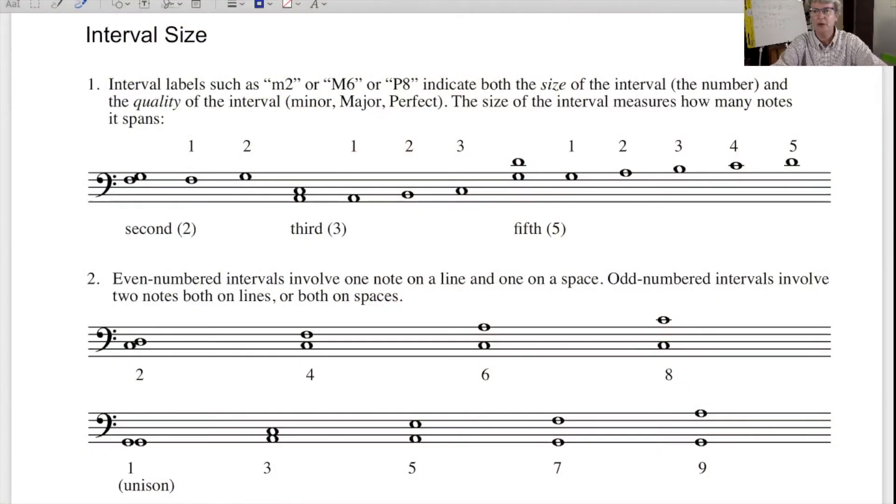So when we talk about intervals, we label them with both a number, which indicates the size, and an adjective, which indicates the quality. So when we use interval labels such as a minor second or a major sixth or a perfect octave, we're giving both the size and the quality.